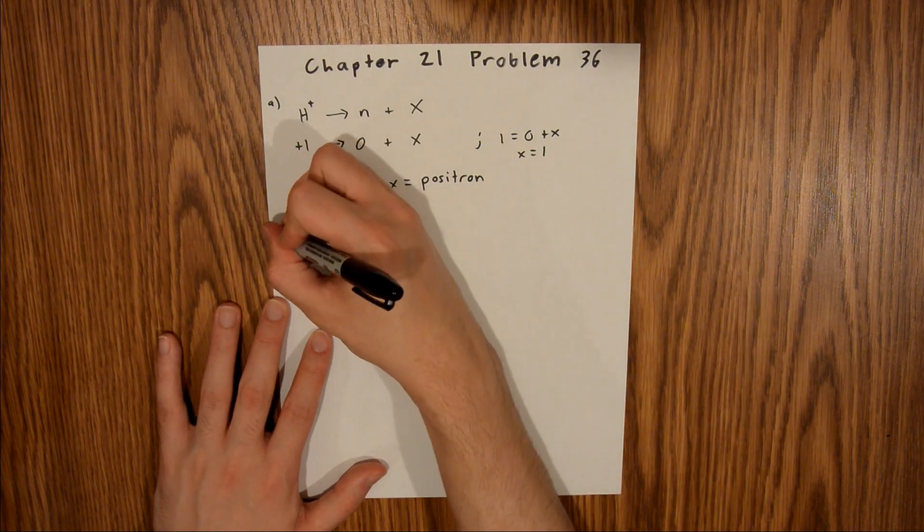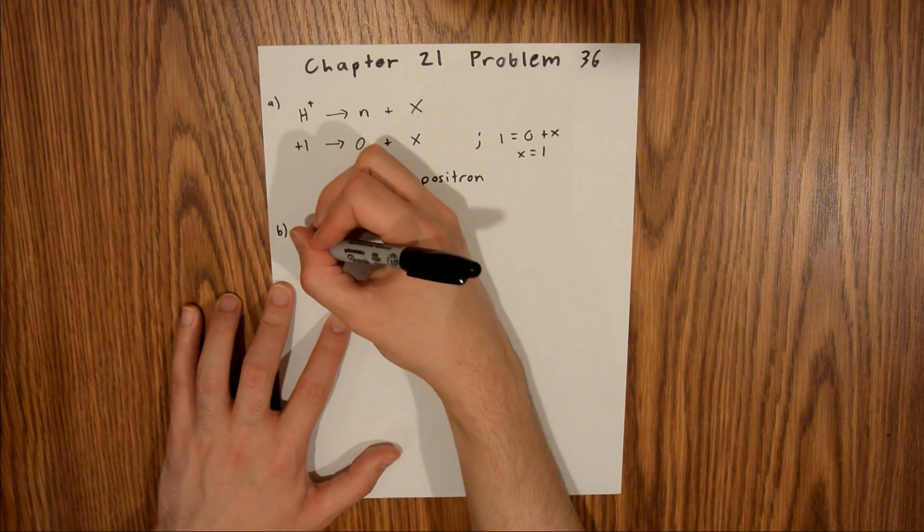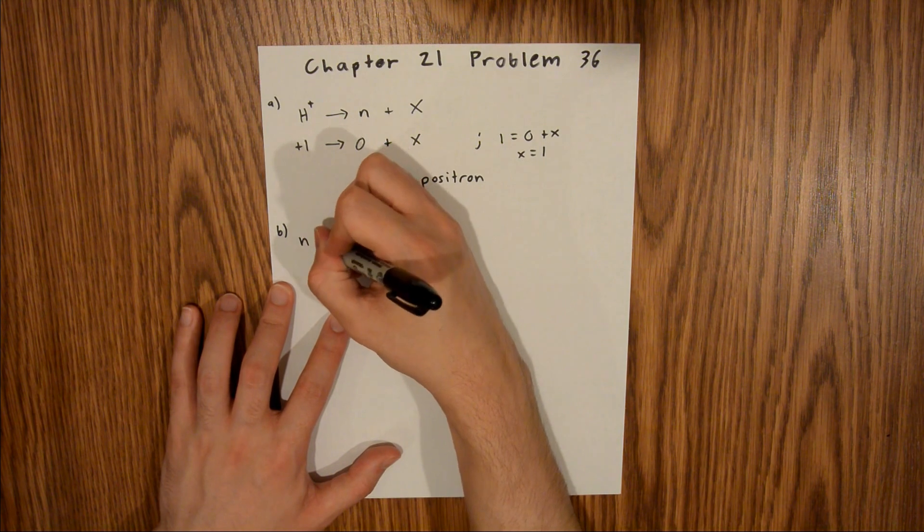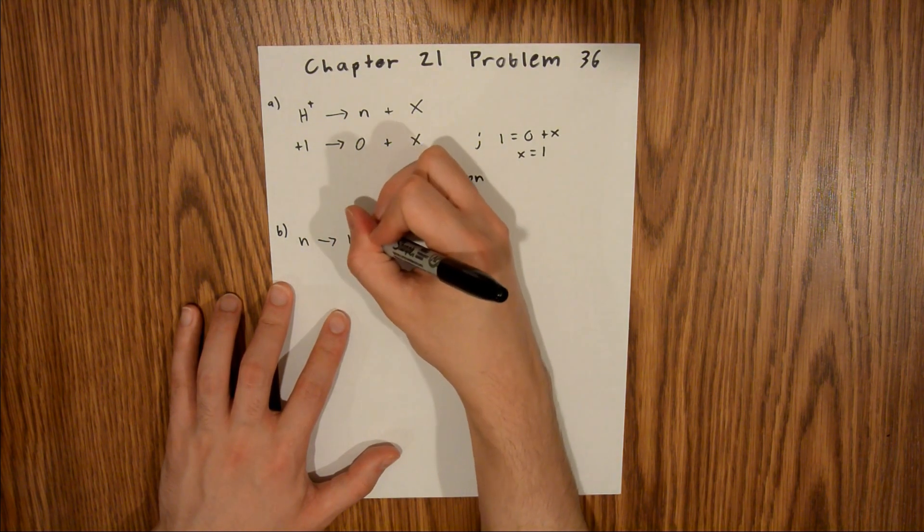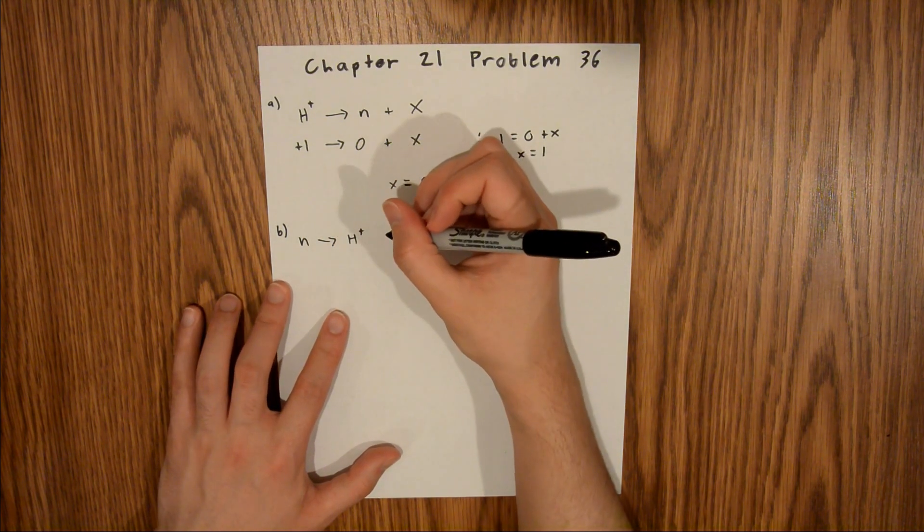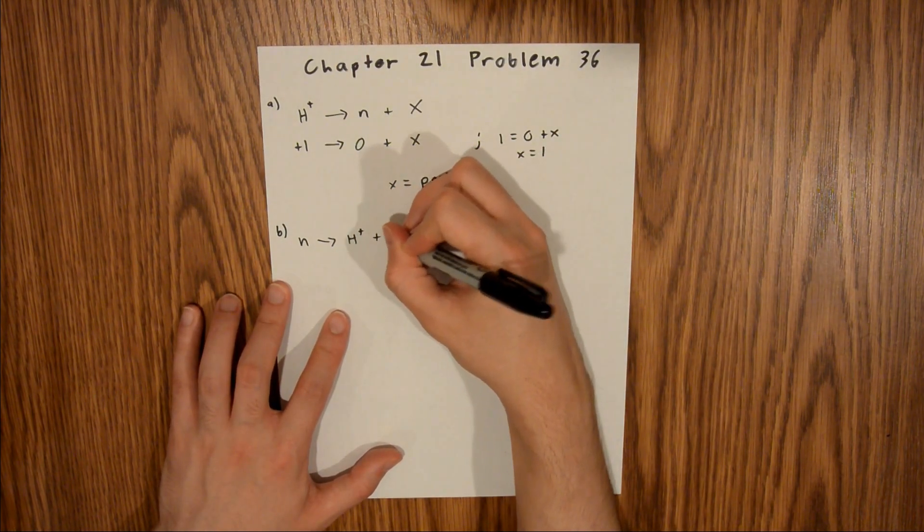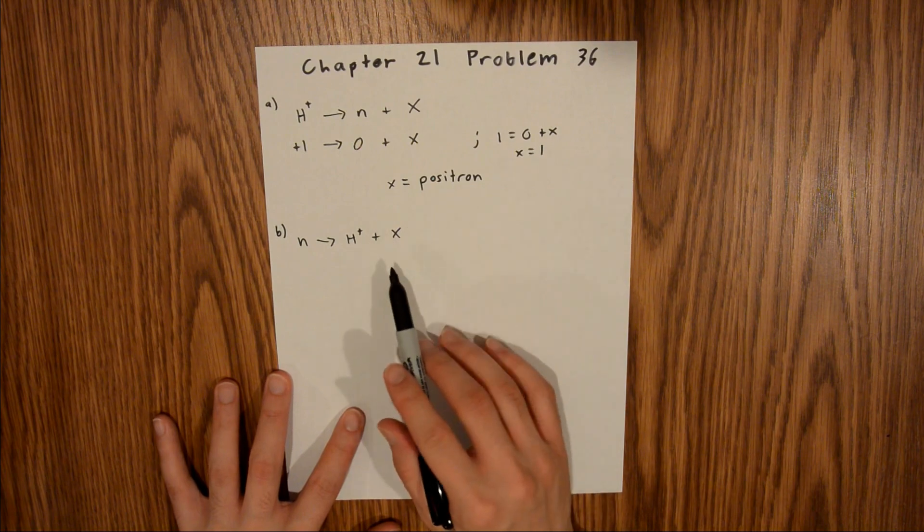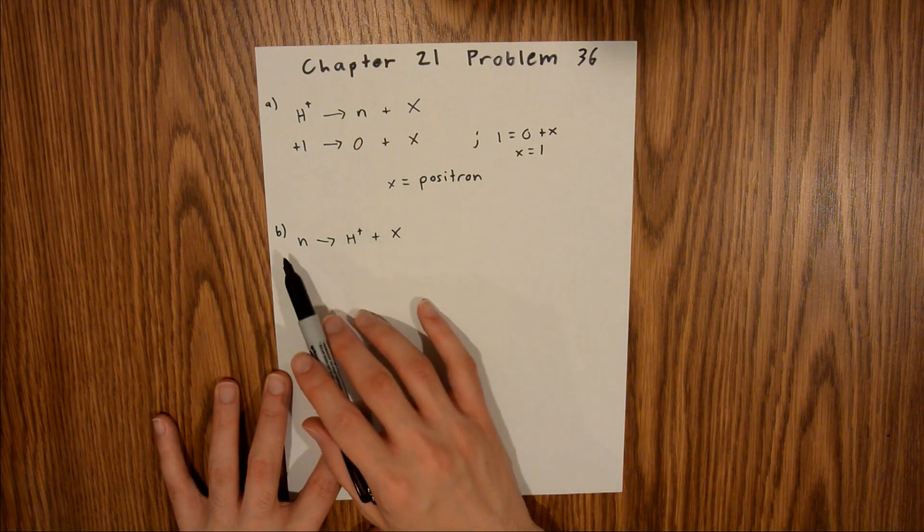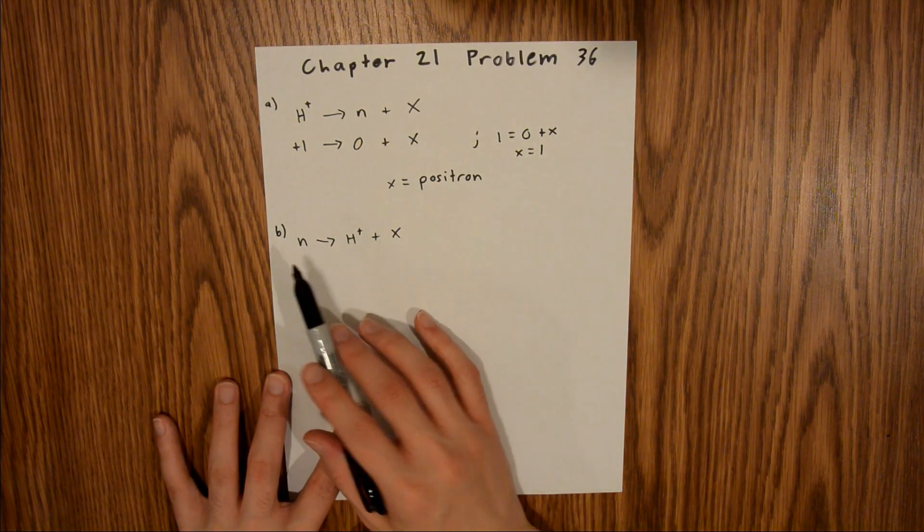Part B says if a neutron is transformed into a proton, is an electron or a positron produced? So again, I'm going to say plus x. The x goes on this side, because this is the side where things are produced, and this is the side where things are started.